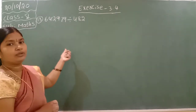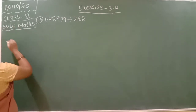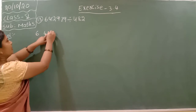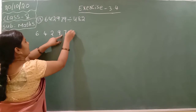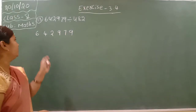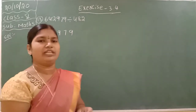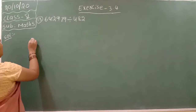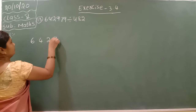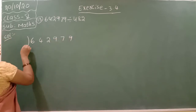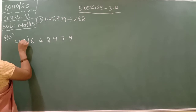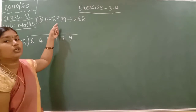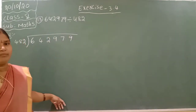So first of all you have to arrange the given numbers. Solution — first of all, number to number — I am leaving finger space for easily understanding the problems. The given number is 6, 4, 2, 9, 7, 9. Divisor is 482. This is called the dividend. Up here we are writing the quotient. The last remaining number is called the remainder.